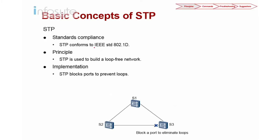STP conforms to the IEEE standard 802.1d — this is the traditional spanning tree standard. The principle of spanning tree is to build a loop-free network. One way to break the loop is to block a port. The implementation is to do a blocking, and that is the basic of STP.